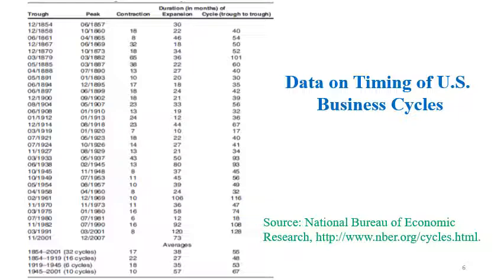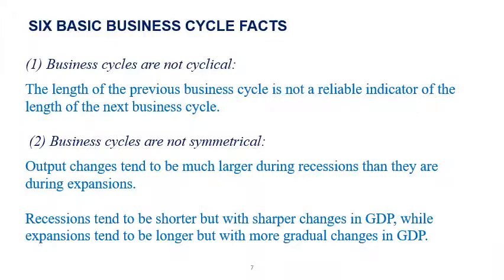In this table we can see the timing of US business cycles. It shows the time of peak, time of trough, contraction, expansion, cycle trough duration in months, and at the end of the table there are averages for the full period. There are six basic business cycle facts.